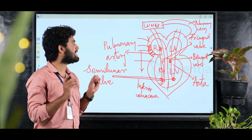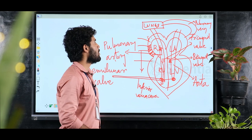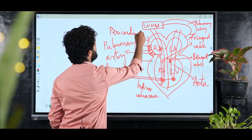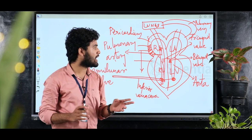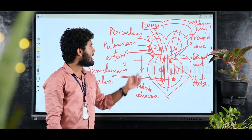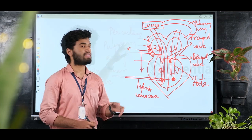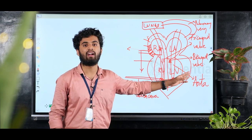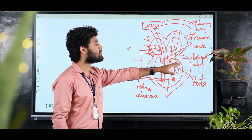To summarize the heart structure: the heart has a double membrane called the pericardium, which contains pericardial fluid. The heart is four-chambered — right atrium, left atrium, right ventricle, and left ventricle. These chambers are separated by walls called septa.